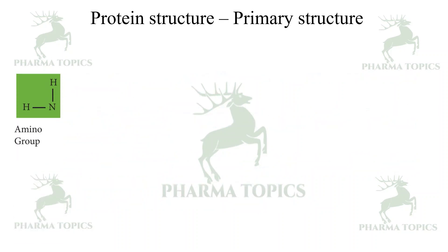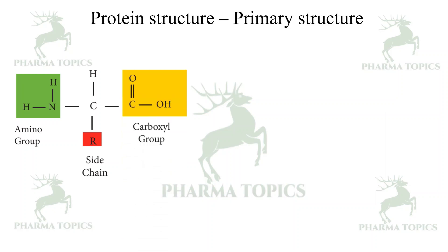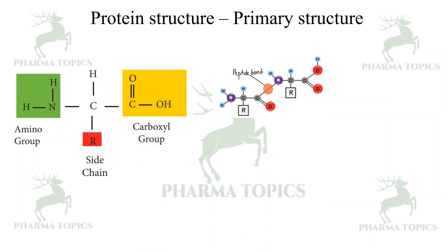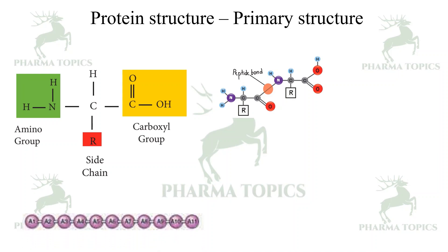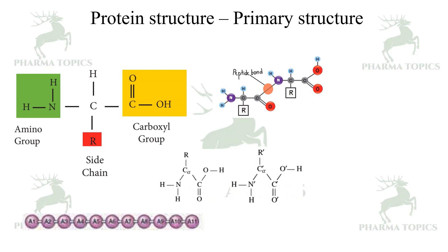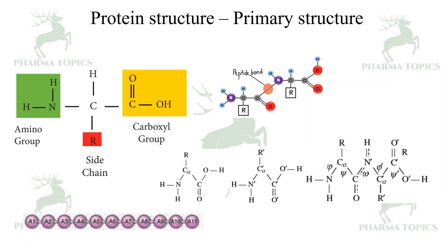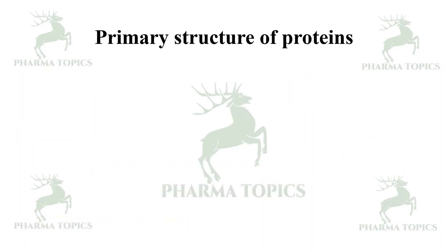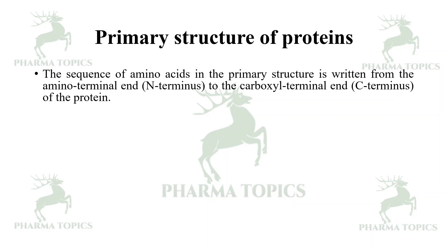The primary structure has an amino group, a side chain, and a carboxyl group. When two amino acids connect, they form a peptide bond, resulting in a linear connection of amino acids. The first and second amino acids are connected by peptide bonds, and the backbone carries phi (φ) and psi (ψ) dihedral angle values.